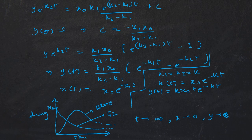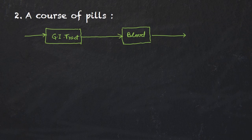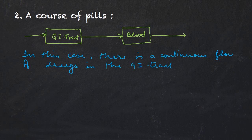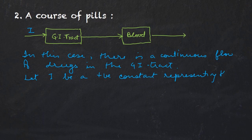Now let's start with Model 2. There are many diseases like a cold in which taking just one pill is not sufficient, so in that case we take a course of pills — more than one pill, two or three at a time. In this case there is a continuous flow of drugs into the GI tract. We assume that I is a positive constant representing the ingestion, or intake, of the drug into the GI tract.